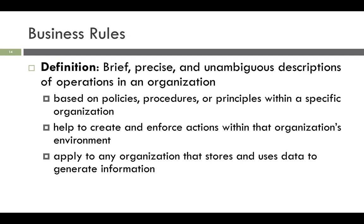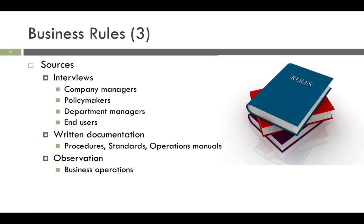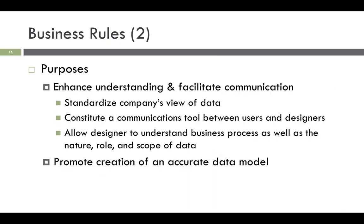Identifying and documenting business rules are very important to database design. Business rules allow the creator to develop relationship participation rules and constraints, and they create the correct data model. Sample business rules could be: one department has many employees, or employees have one department. Sources of business rules are managers, policy makers, department managers, written documentation, procedures, etc. Business rules also allow designers to understand business processes and the nature and scope of the data. Data is a communication tool between users and designers and helps to standardize the company's view of the data.